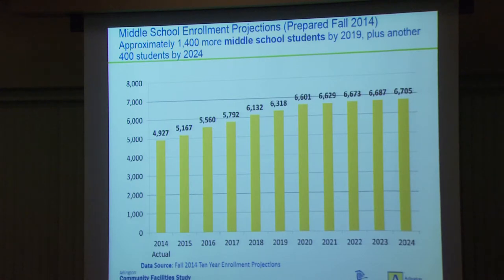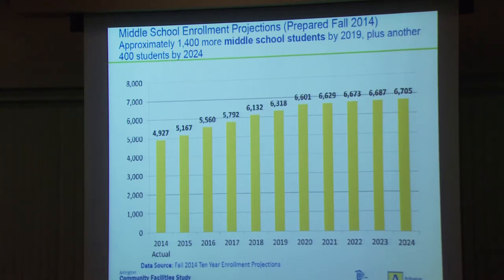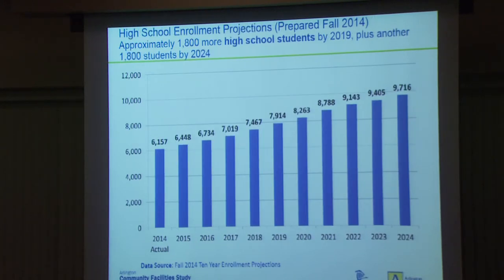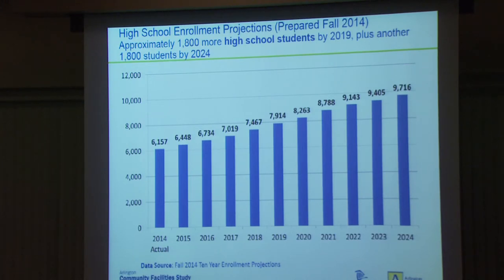For middle school: approximately 1,400 more middle school students over the next five years. Williamsburg Middle School, currently our largest, has 997 seats. The new preferred maximum middle school is about 1,300 seats — so we need a little more than one middle school. For high school: 1,800 more high school students over the next five years. With average high school capacity around 1,900, and a new max possibly up to 2,200, we're saying we'll probably need another high school. I'm emphasizing the first five years because projections beyond that get a little more fuzzy.